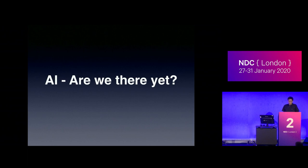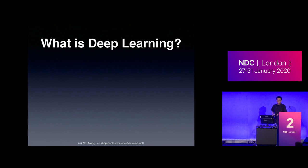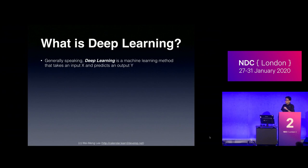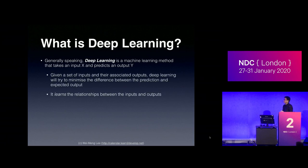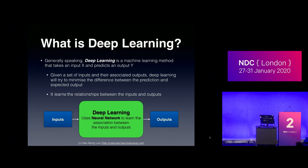Generally speaking, deep learning is a machine learning method that takes an input X and predicts an output Y. You have a set of inputs and corresponding outputs, and your deep learning model tries to learn the relationships between those inputs and outputs. That is deep learning.